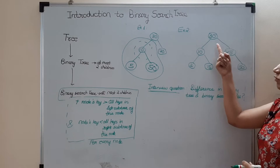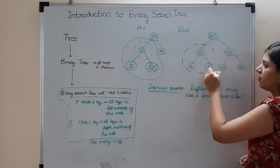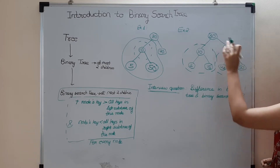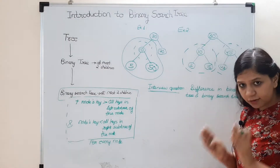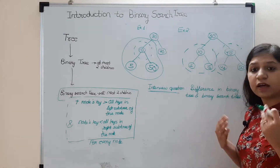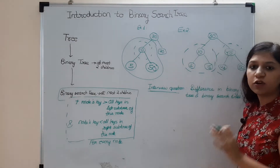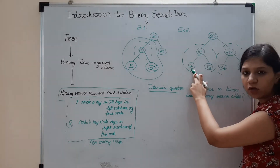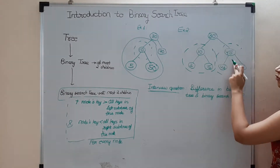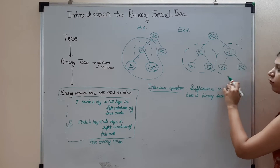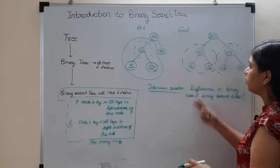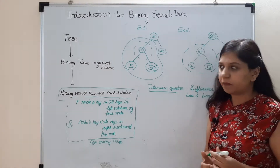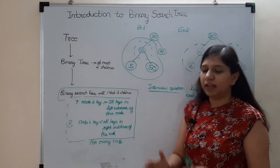Here is another example: you have 30 at the root. Its left subtree contains 10, 2, and 15; its right subtree contains 45, 42, and 50. For 30, all left keys are smaller and all right keys are bigger. We also check every other node: for 10, 2 is smaller and 15 is bigger; for 45, 42 is smaller and 50 is bigger. Since 2, 15, 42, and 50 are leaf nodes, we need not check them.